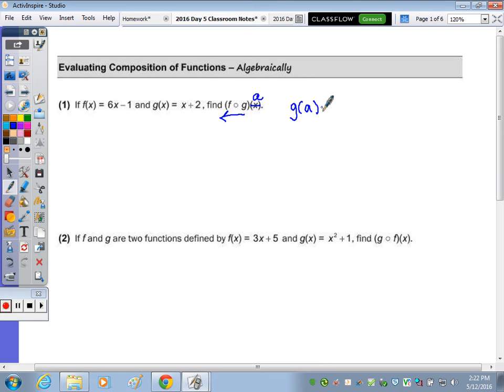And then take that answer and plug it into the F function. So G of A, that's this function right here, is just A plus 2. That's the answer. You just substitute the A for the X.